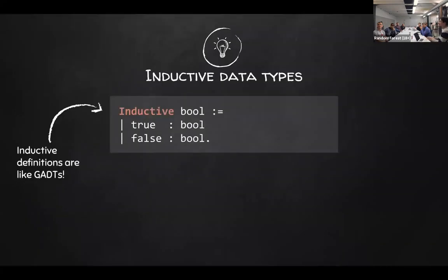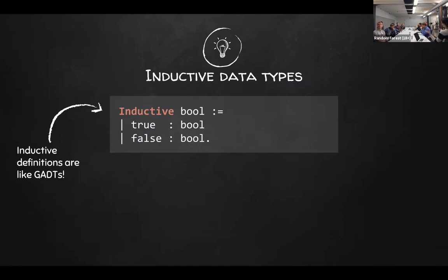Let's talk about functional programming in Coq. Inductive data types in Coq are a lot like GADTs — generalized algebraic data types — from Haskell. Here I'm just defining a type to represent Booleans, and there are two constructors: true and false, which are Booleans.